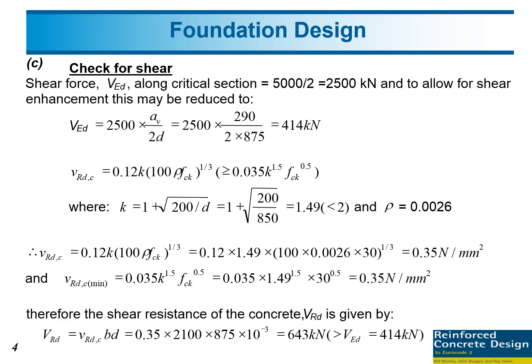After that, check for shear. Because we have N equals 5000, the shear force acting on one pile is 5000 divided by 2, so we have 2500 kilonewtons. Then we need to get VED, the design shear force. This 2500 kilonewtons multiplied by the enhanced shear alpha V divided by 2D, so that we have 414 kilonewtons. After that calculate VRDC.